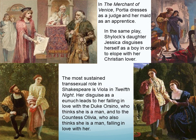Behind that disguise Viola is of course a woman, and she falls in love with the Duke — but the Duke thinks she's a man and gets confused about why this man is trying to get so close to him. Also the Countess Olivia thinks that Viola is a man and consequently falls in love with the man she thinks Viola is. So it's happening both ways around.